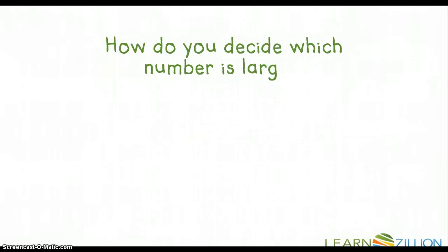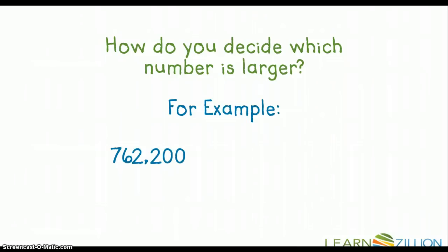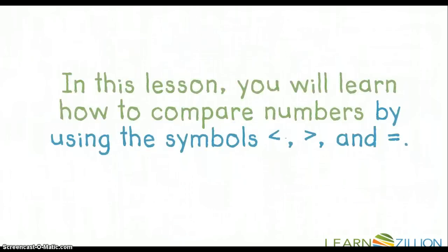Our guiding question for today is: how do you decide which number is larger? For example, if we have the number 762,200 and the number 759,999, we want to be able to compare them to say which number is larger. In this lesson you will learn how to compare numbers by using the symbols less than, greater than, and equal to.